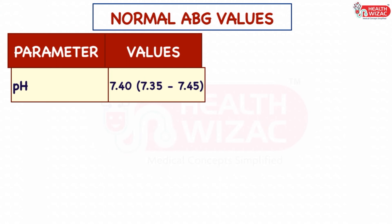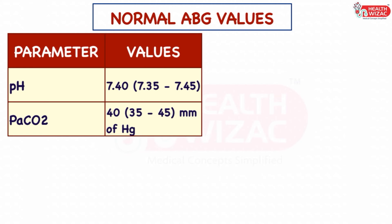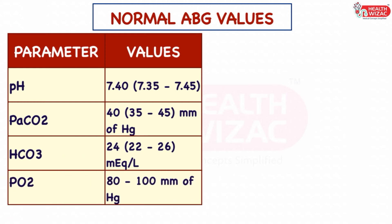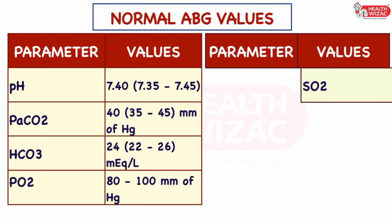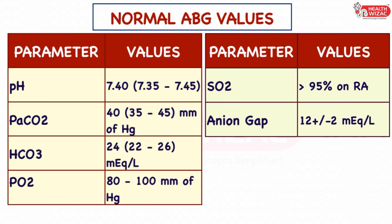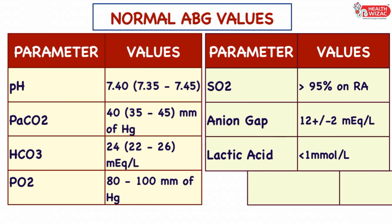Normal pH is between 7.35 to 7.45. Normal PaCO2 is between 35 to 45 mmHg. Normal bicarbonate is between 22 to 26 mEq/L. Normal PO2 is between 80 to 100 mmHg. Normal SO2 or saturation is more than 95% on room air. Normal anion gap is 12 plus or minus 2 mEq/L. Normal lactic acid level is less than 1 mmol per litre.